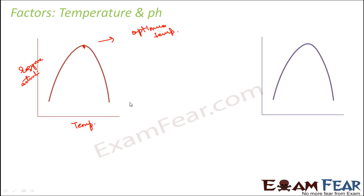Very low temperature as well as very high temperature both affect enzyme activity adversely. In fact, this is also why keeping things in the refrigerator stops enzyme activity — the milk does not get curdled because the enzymes cannot act at that temperature. That is why we often keep food in the refrigerator to prevent it from getting spoiled.